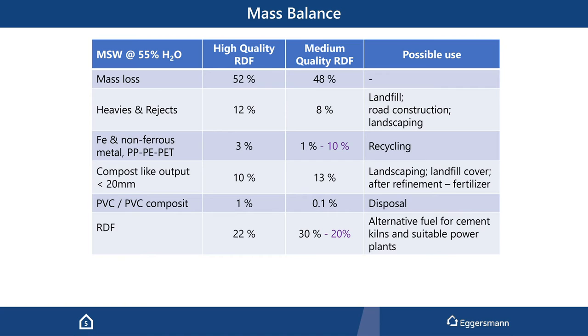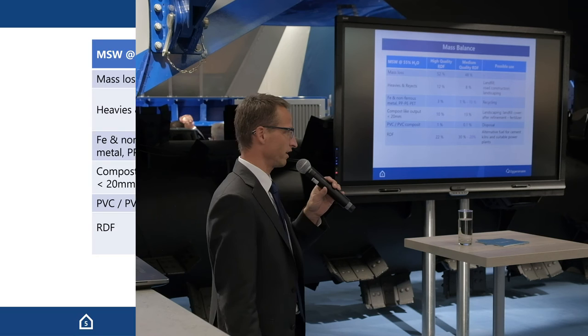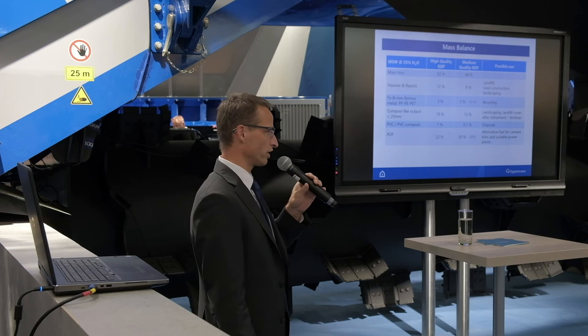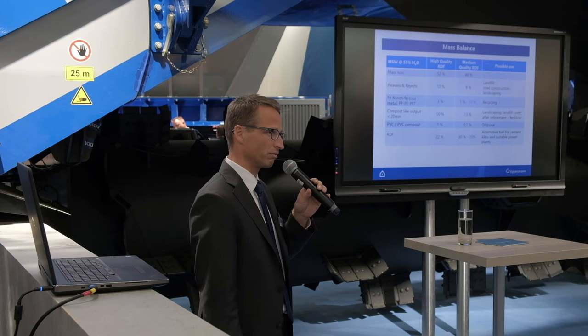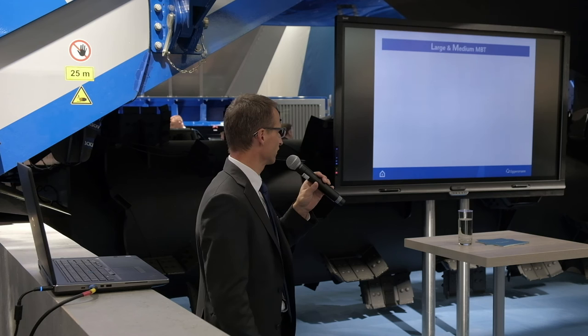If we look at the mass balance — and I'm coming from a different region — this is more the waste composition in Southeast Asia, with high moisture contents up to 60%. We talk about 20–25% dry RDF at the end for the high quality, and around 30% for the medium quality, or less, because if you take out the recyclables to sell to make the RDF cheaper, it will of course be a bit less.